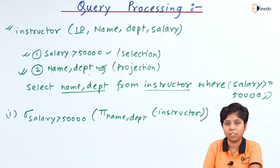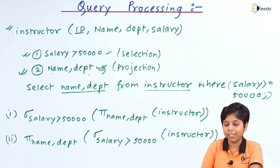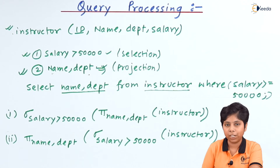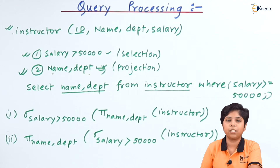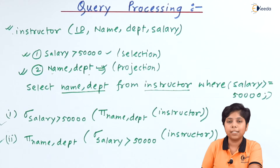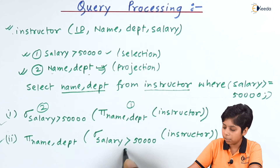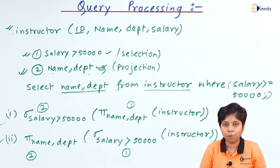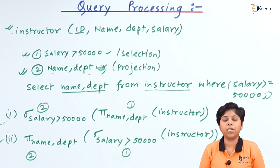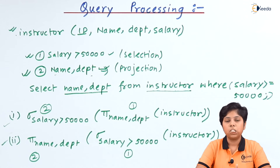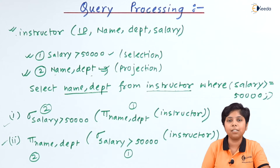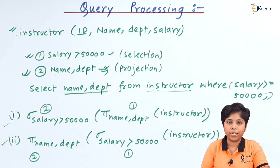We can also have another relational algebraic expression: first select from the instructor relation where salary is greater than 50,000, selecting all attributes, then from the selection project only name and department. Which one is more cost effective? Both require a number of query operations. In the query evaluation plan, this gets aggregated, and an optimizer determines which generates lower cost for each relational algebraic expression.